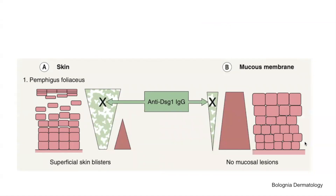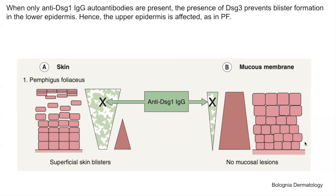We will now use this theory to explain the presentation of various forms of pemphigus. In pemphigus foliaceus, autoantibodies target DSG1. DSG1 expression dominates in the superficial layers of the epidermis where DSG3 has minimal expression. Therefore, when autoantibodies target DSG1 here, the skin is affected, resulting in acantholysis and a split in the superficial surface. In the deeper layers of the epidermis, ample DSG3 expression compensates for any DSG1 targeted by autoantibodies. In the mucosal membrane, ample DSG3 expression throughout also compensates for any loss of DSG1 via autoantibodies.